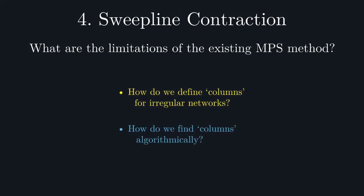To circumvent both of these limitations, the sweep-line contraction algorithm eschews columns altogether. The result is a contraction algorithm which will function on any 2D graph, not requiring any manual preprocessing of the graph at all, allowing it to be easily applied to complex lattices or even randomly generated networks.